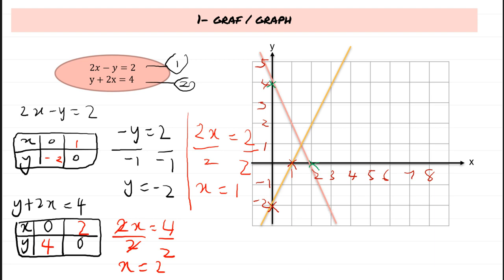We can see the point of intersection of the two lines. It appears to be at x equals 1.5 and y equals 1. So the answer is x equals 1.5 and y equals 1. However, reading from a graph can give an approximate value rather than an exact one, so let's verify using other methods.